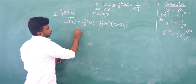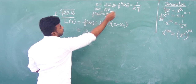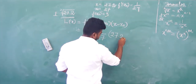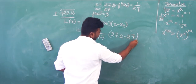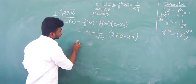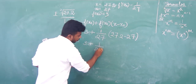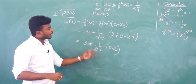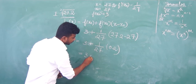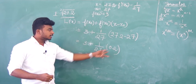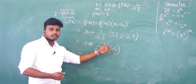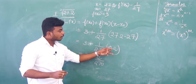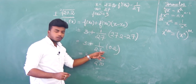Now applying the linear approximation formula: f(x) ≈ f(x0) + f'(x0) · (x − x0). f(x0) = cube root of 27 = 3, f'(x0) = 1/27, and x − x0 = 27.2 − 27 = 0.2. So the answer is 3 + (1/27) × 0.2.